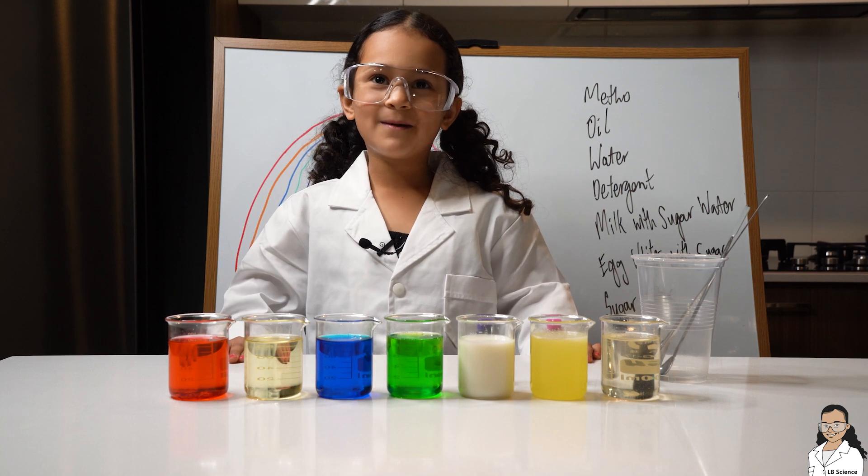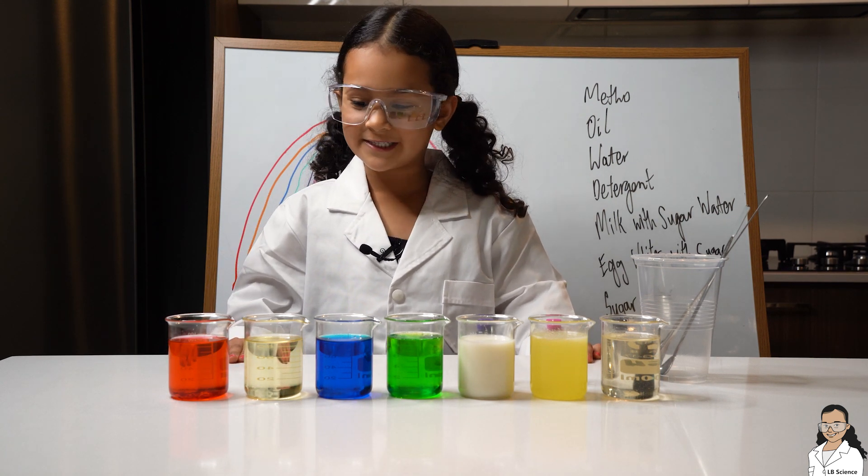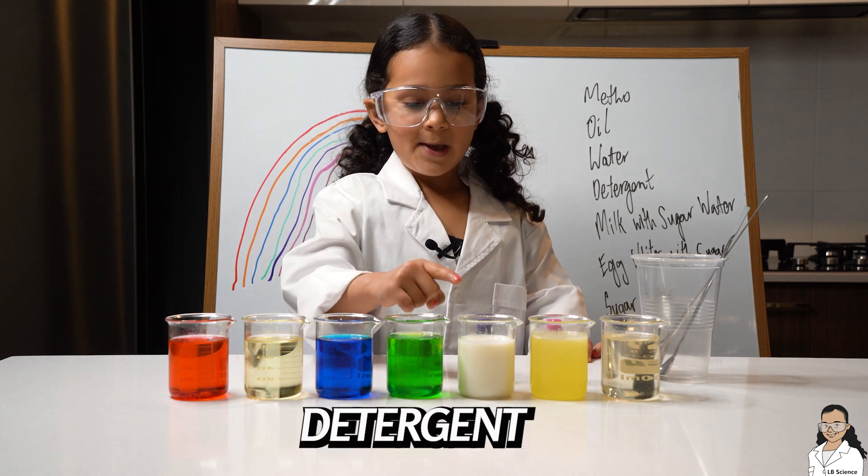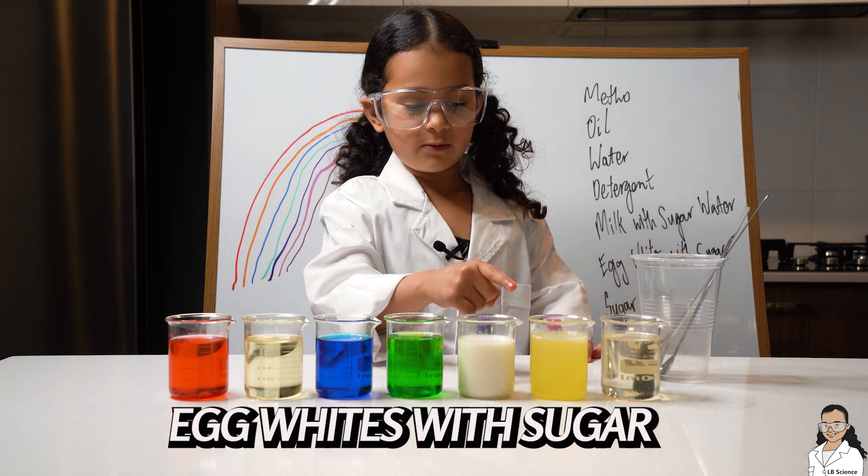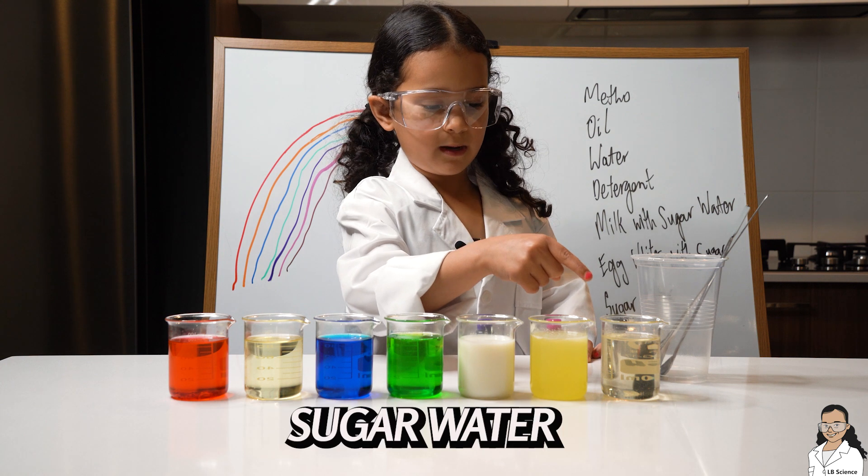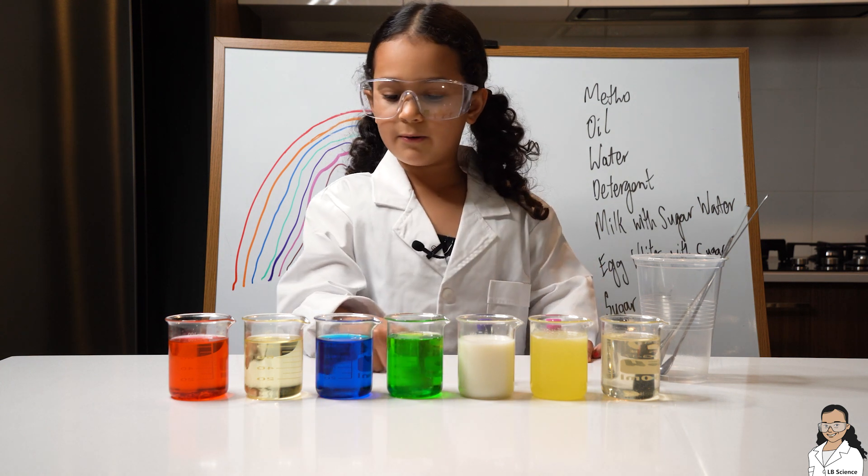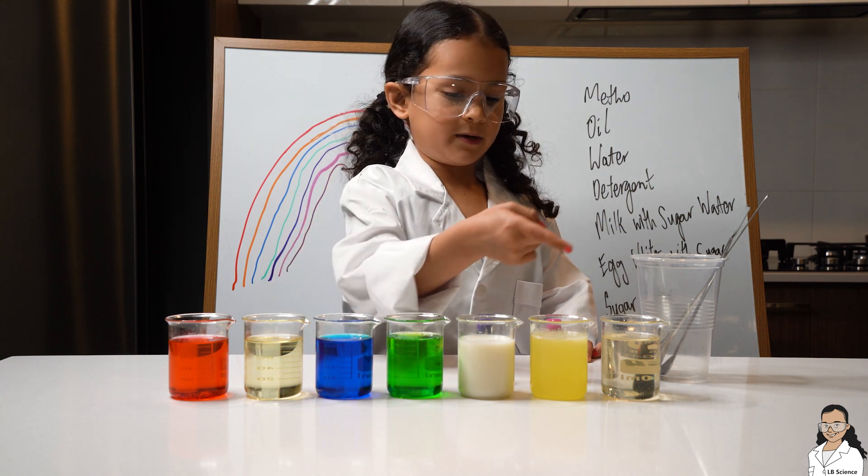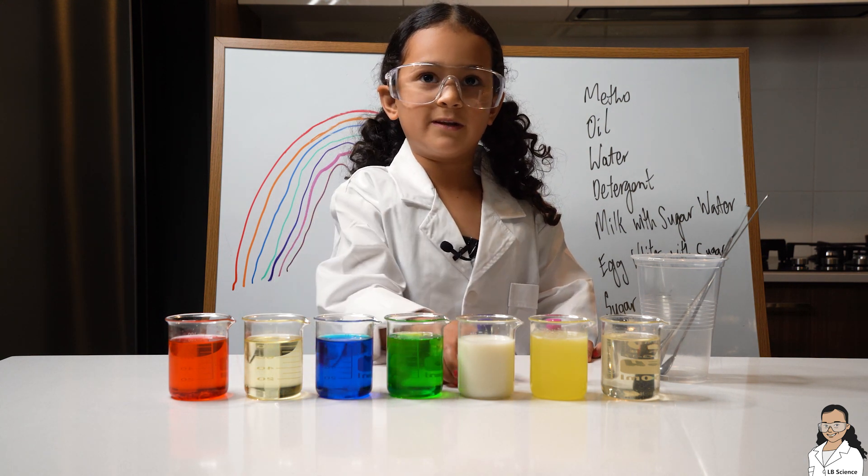Let's get started on our experiment. You'll need seven different layers. They are: methane, oil, water, detergent, milk mixed with sugar, egg whites mixed with sugar, sugar mixed with water. I already put colors in these ones, except for the oil, and now I'm gonna put colors in these ones. You can put whatever color you want.